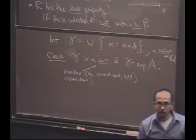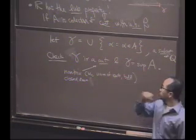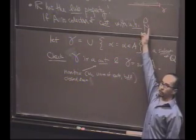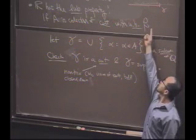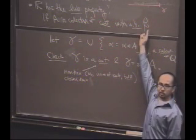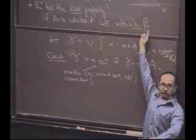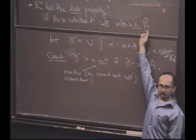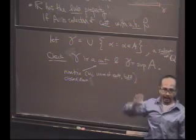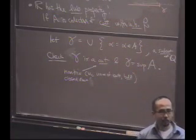Why is there no largest member? Again, if you pick something in gamma, it must be in some alpha. But alpha has no largest member. Therefore, it has something bigger than it. Therefore, that thing's in gamma. With me?